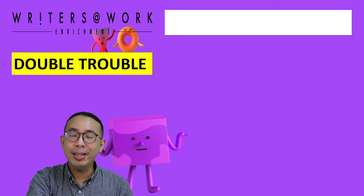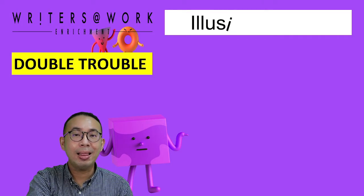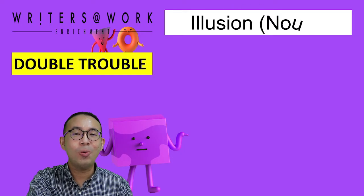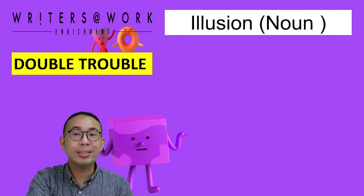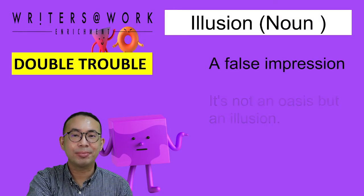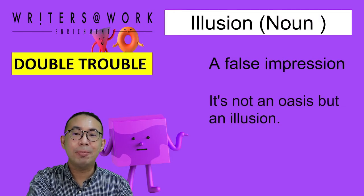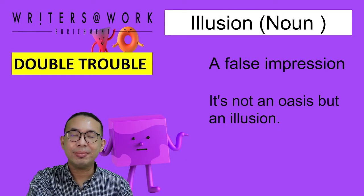The next word, illusion, is spelled as I-L-L-U-S-I-O-N. It is also a noun. It means a false impression. For example, it's not an oasis, but an illusion.